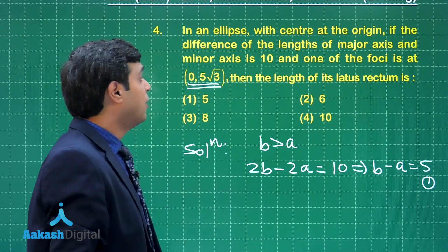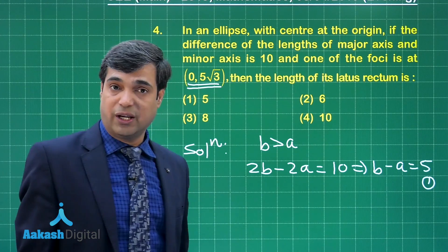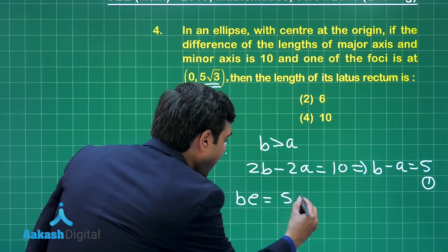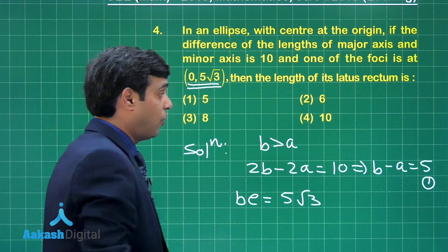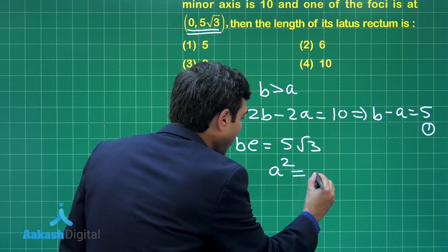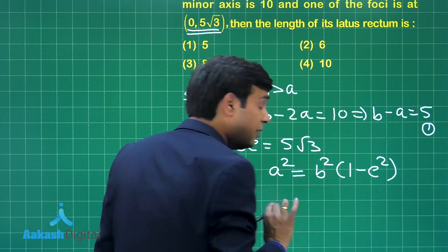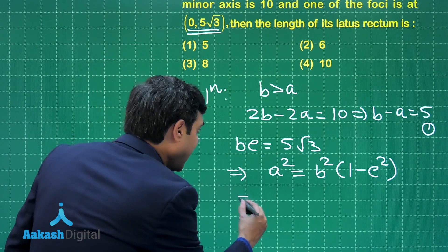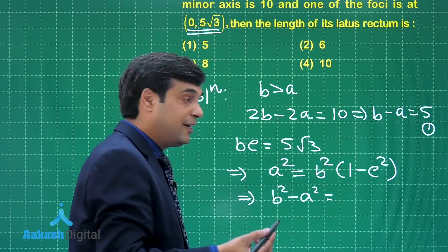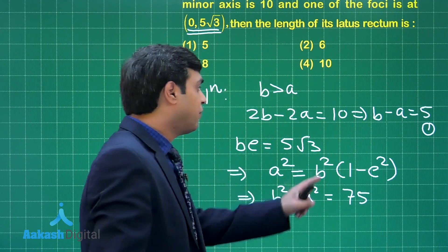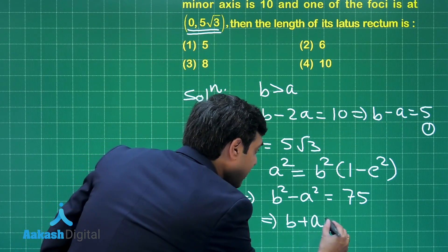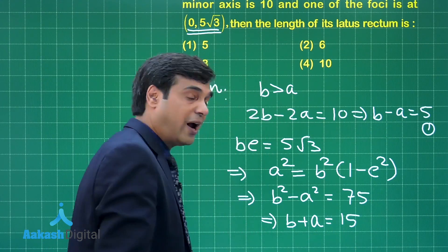One of the foci is (0, 5√3), so we write be = 5√3. Using the eccentricity relation a² = b²(1 - e²), we get b² - a² = b²e² = 75. We have b - a = 5; substituting gives b + a = 15 — equation number 2.